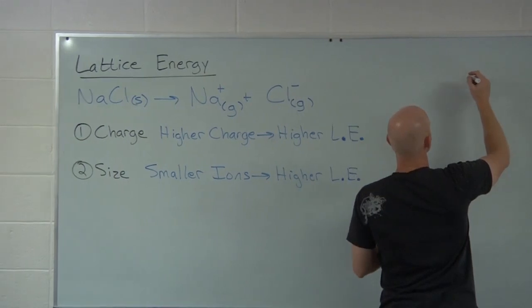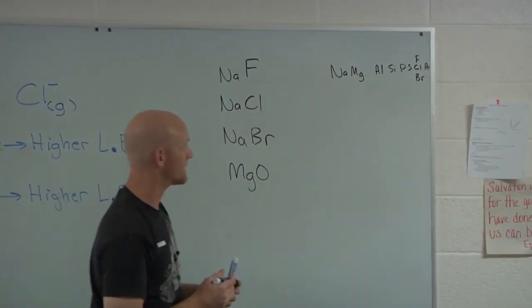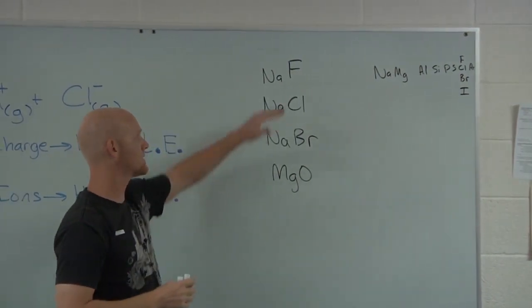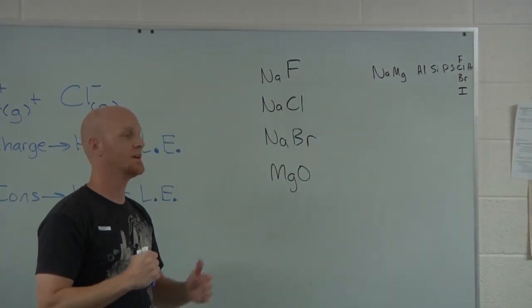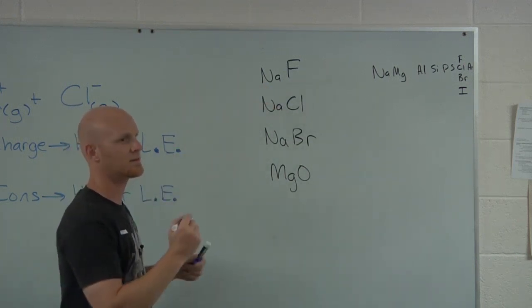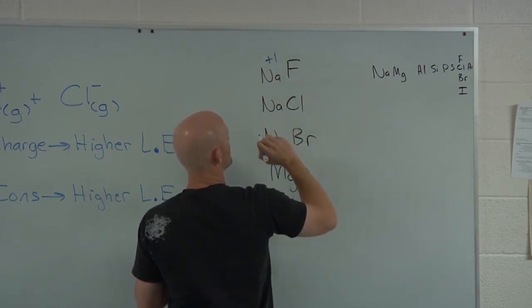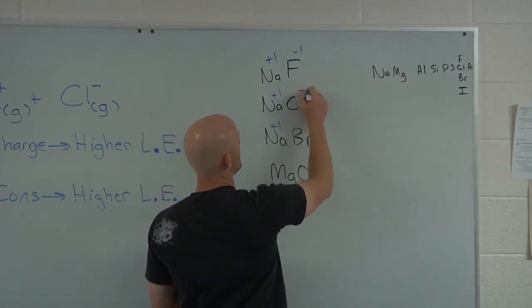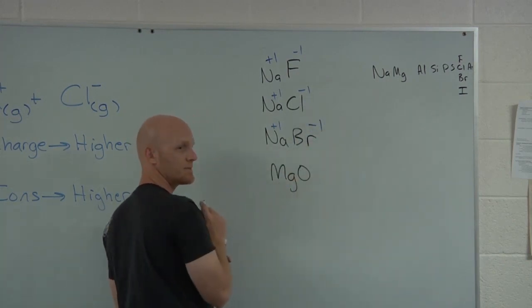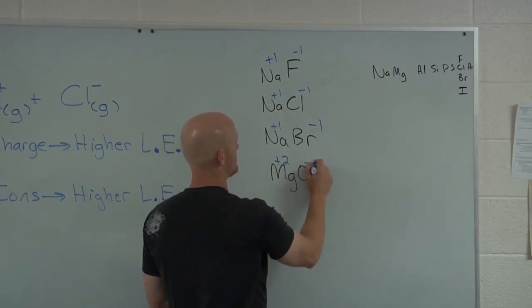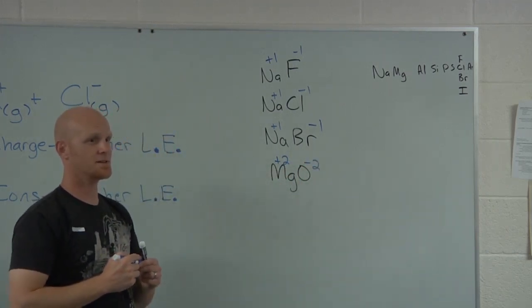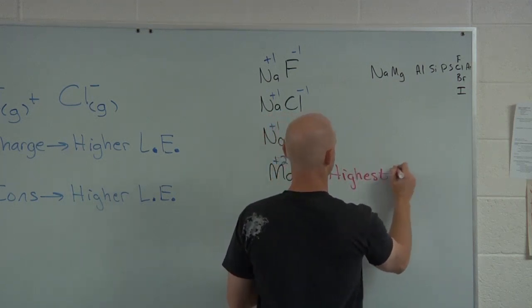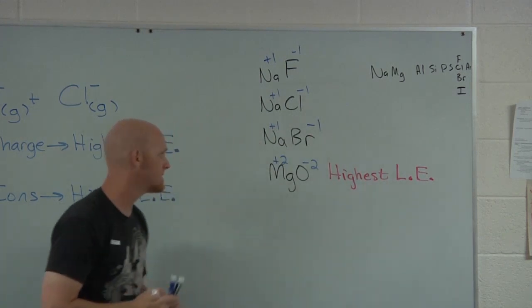A typical question might list different ionic compounds. If I give you four compounds and ask which has the highest lattice energy — first look at the charges. Sodium is plus one in all of these. Fluoride, chloride, bromide are all minus one. But magnesium is plus two and oxygen is minus two. Based on charge alone, MgO has the highest lattice energy.